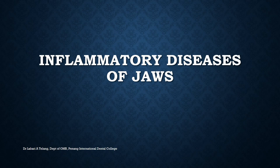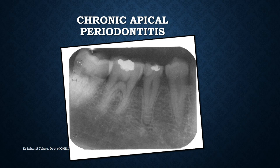Looking at inflammatory diseases of the jaws — first, chronic apical periodontitis. It appears as widening of the periodontal ligament space, generally seen in a tooth with pulp involvement due to caries, fracture, or trauma from occlusion. You can see widening of the periodontal space in the apical area and thickening of the lamina dura around the apical region of the tooth.